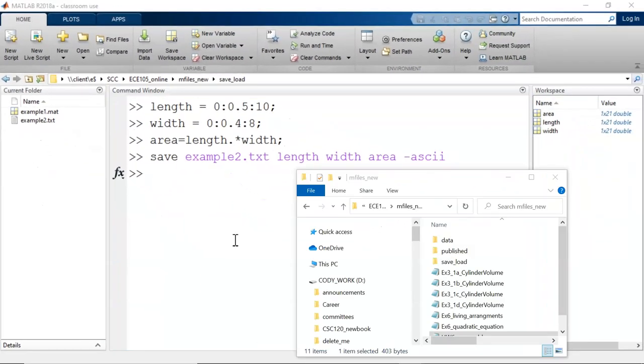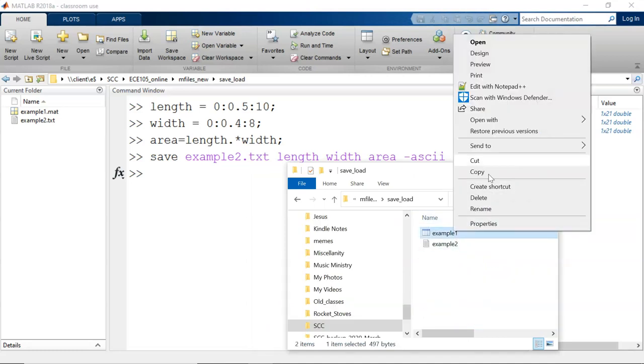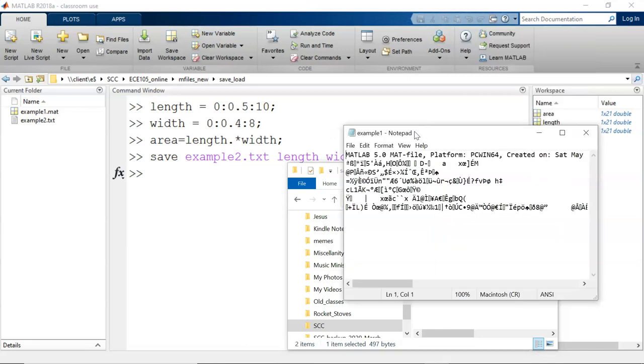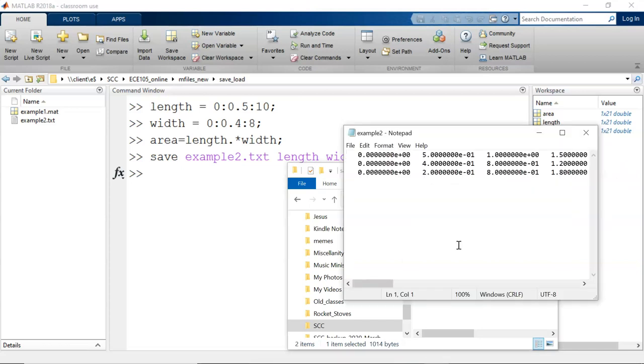Let's compare these files outside of MATLAB. In my case, in my computer's file explorer, I try opening the .mat file using Notepad. As you can see, it looks a little funny. But the .txt file opens nicely with a basic text editor like Notepad. I can see the three rows of data, length, width, and area, that I saved from MATLAB.